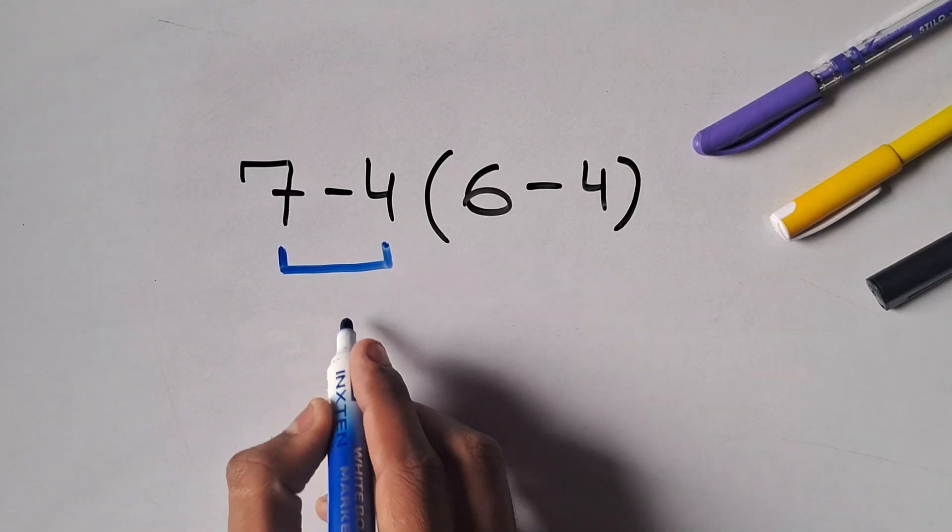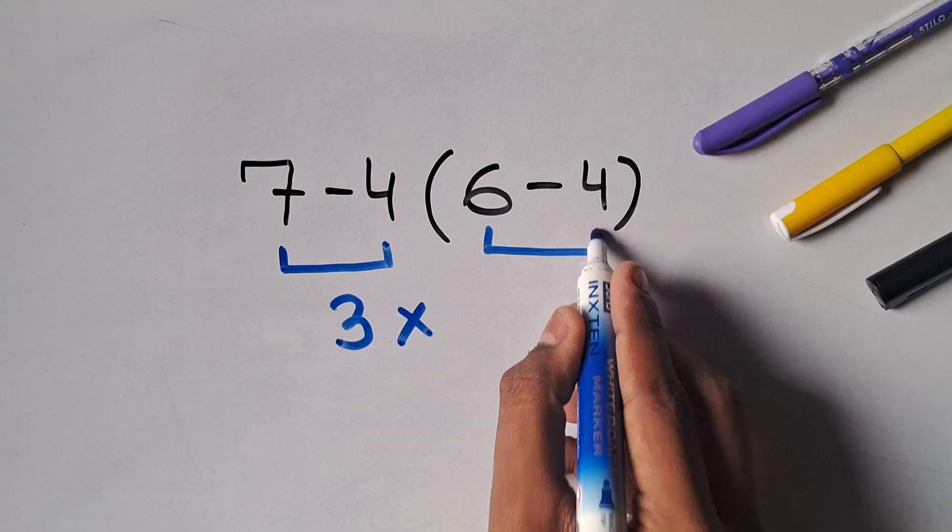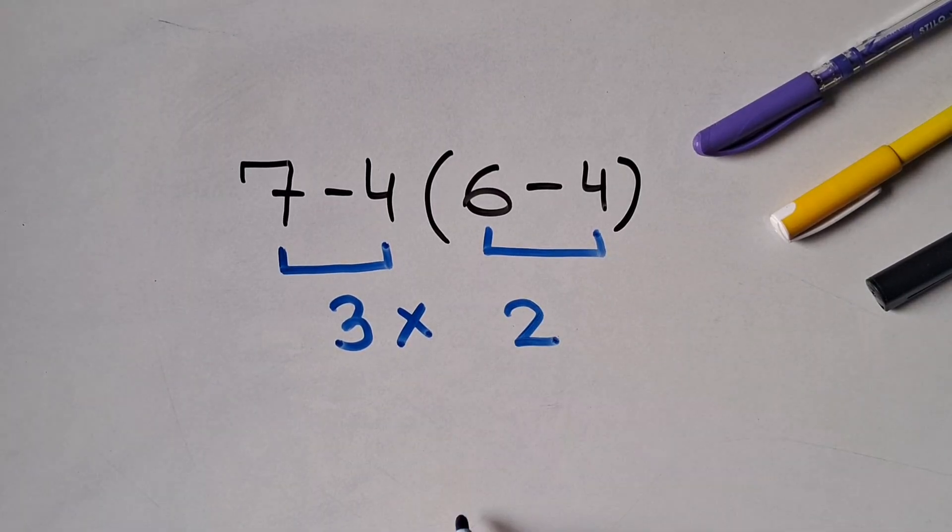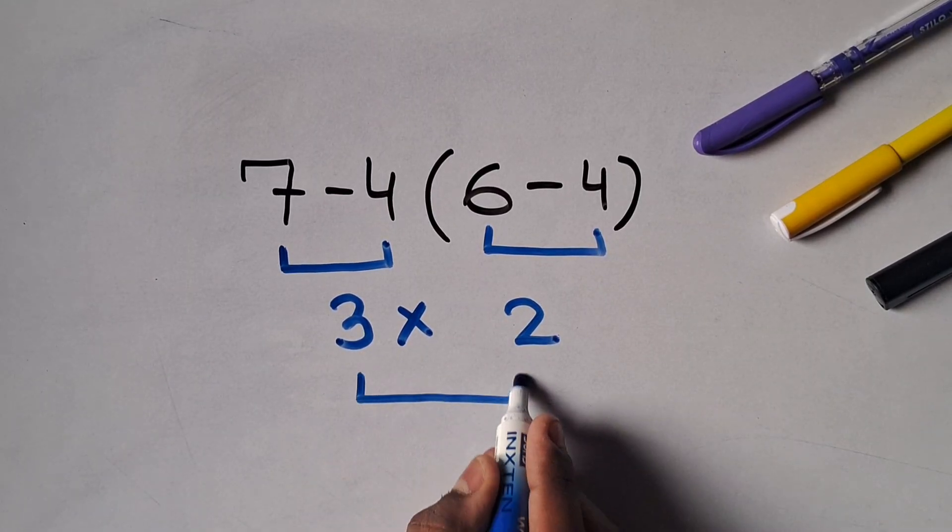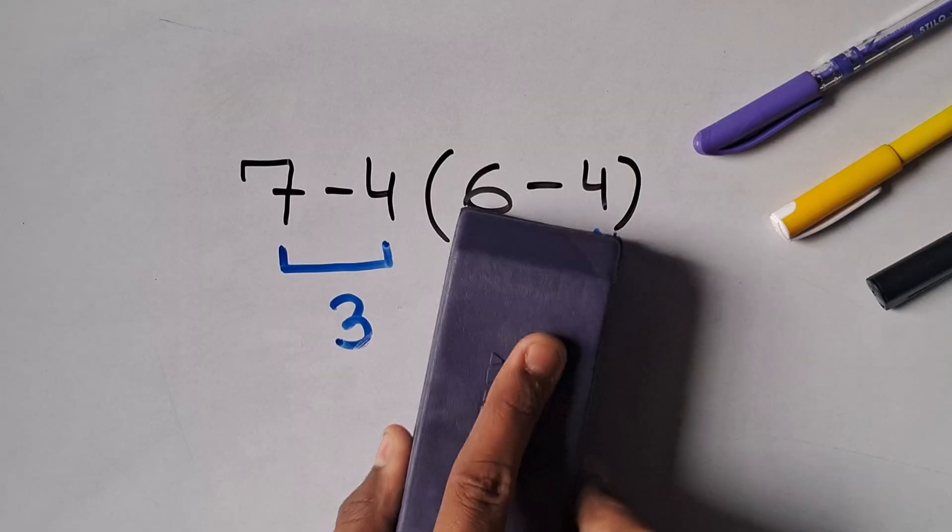7 minus 4 is equals to 3, and 3 times 6 minus 4 is equals to 2, so 3 times 2 is equals to 6. But 6 is not the correct answer for the expression, as according to the order of operations...